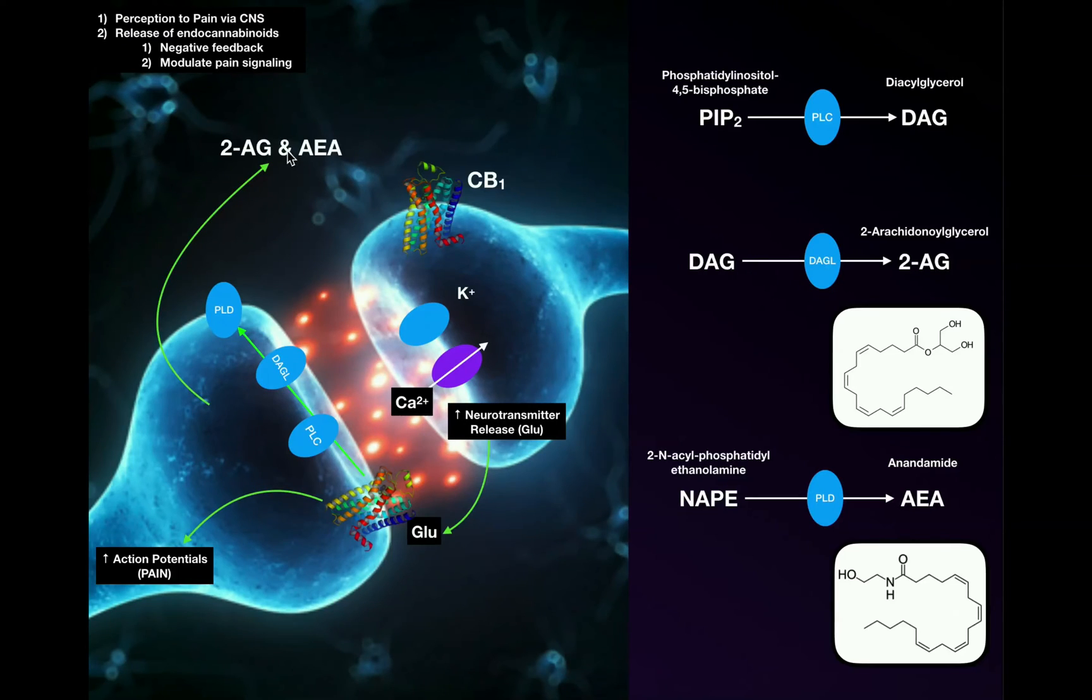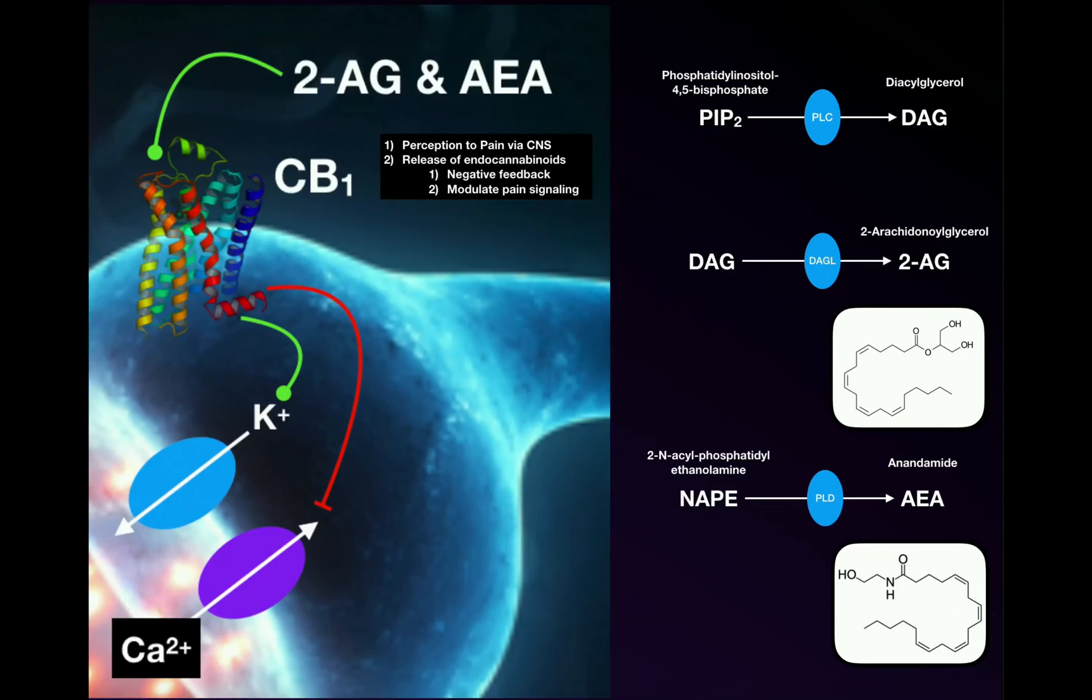These two molecules are going to bind to this receptor on the presynaptic neuron called CB1. This is a cannabinoid receptor. When 2-AG and anandamide bind to the cannabinoid receptor, there's two things that happen. One, it stimulates potassium efflux. The other thing is it actually inhibits the calcium influx.